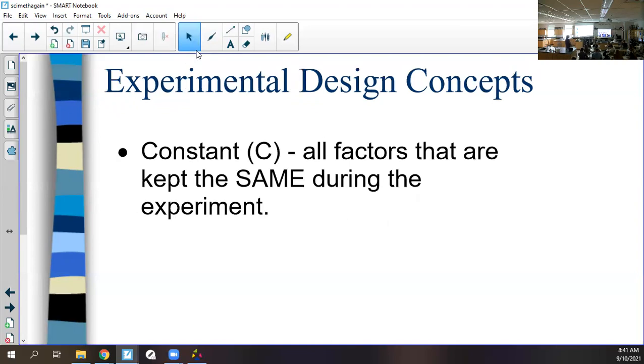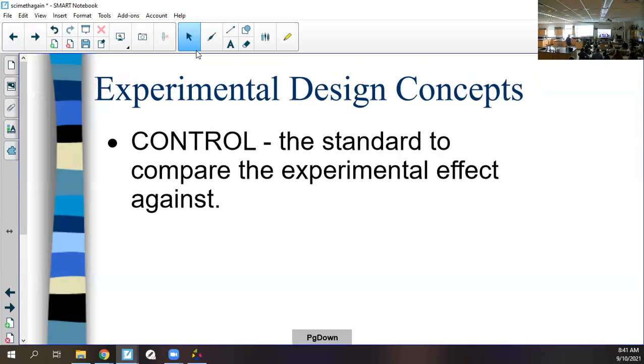Constants are all factors kept the same during the experiment. Constants are extremely important. That's another problem with the ivermectin controversy—they did it in a petri dish. A petri dish and a body are extremely different with lots of different factors. They need more time to prove whether that's healthy. Control is the standard to compare the experimental effect against. Not every experiment has a control, but in psychology or health, it's the placebo. If they test a new medicine, they give half the people the medicine and half a placebo where they think they're taking the medicine. Then they see if there was really something that helped.